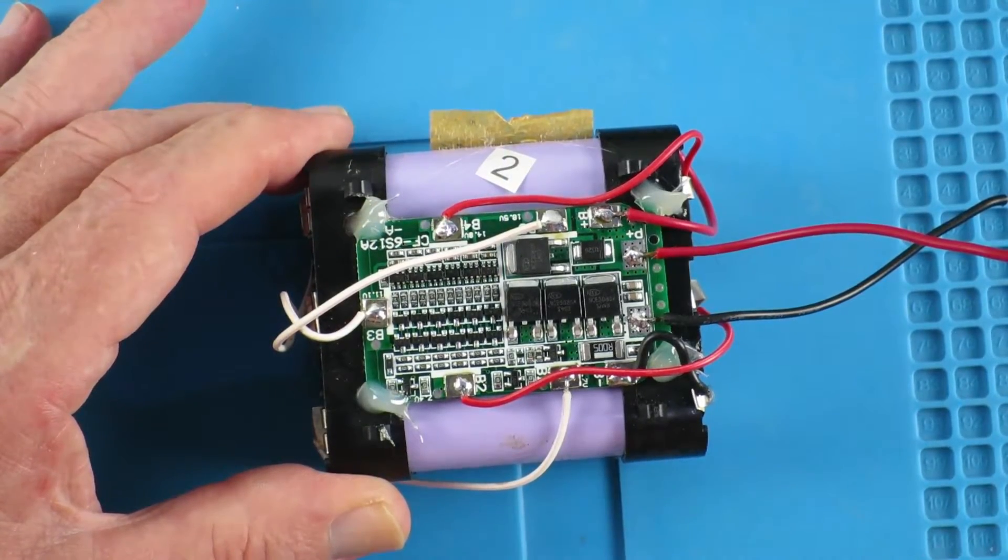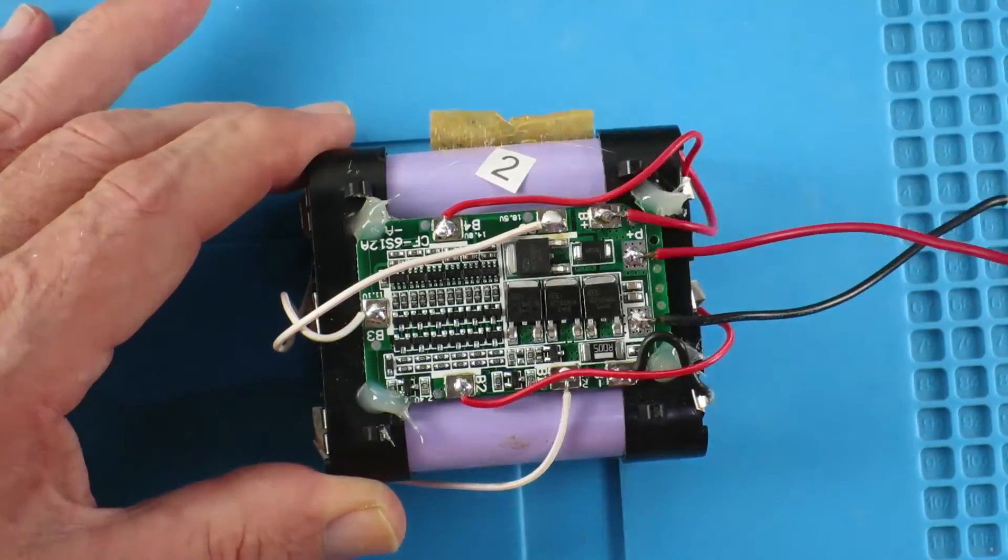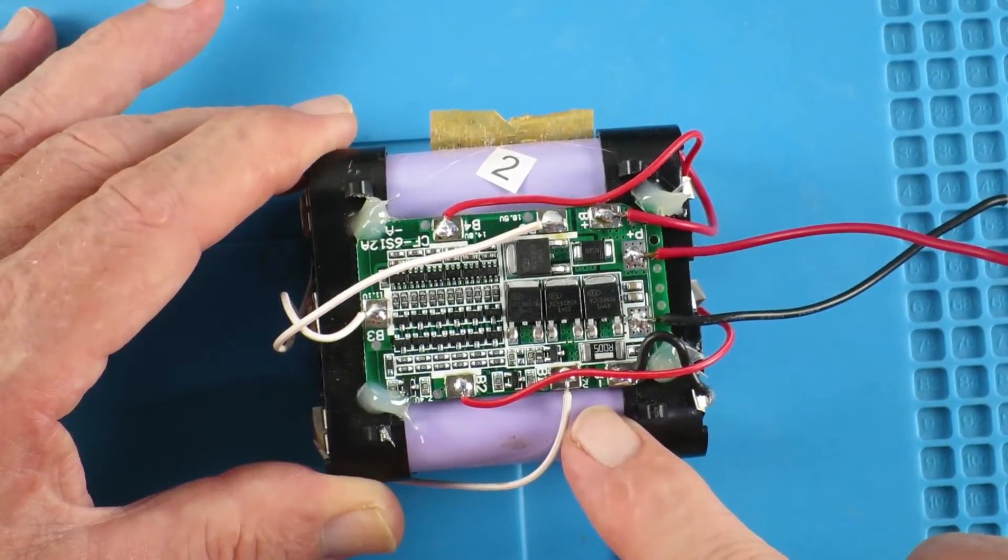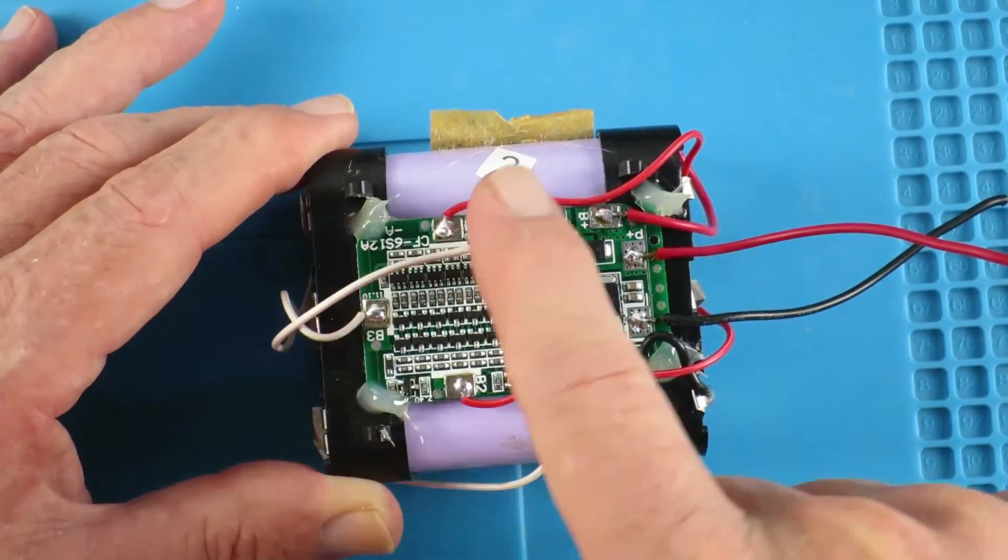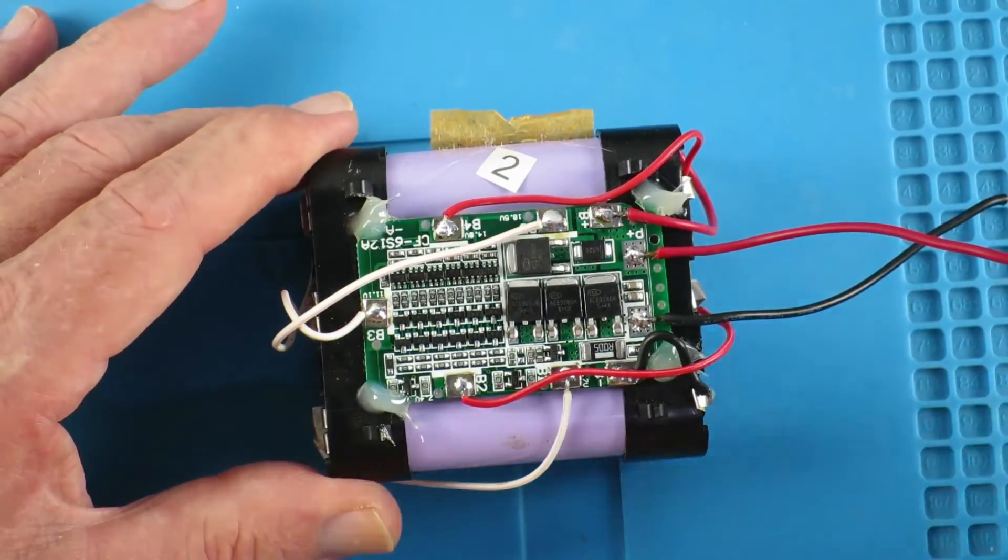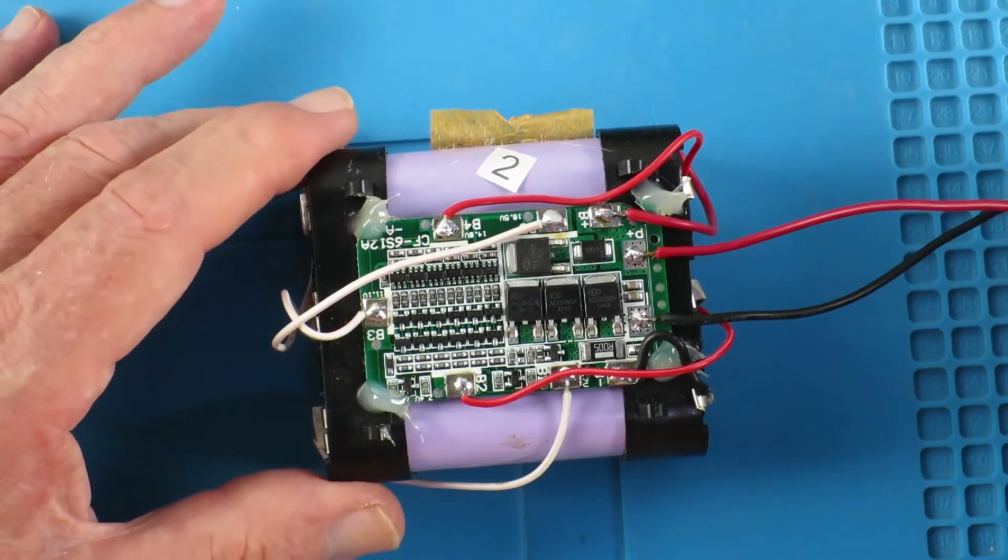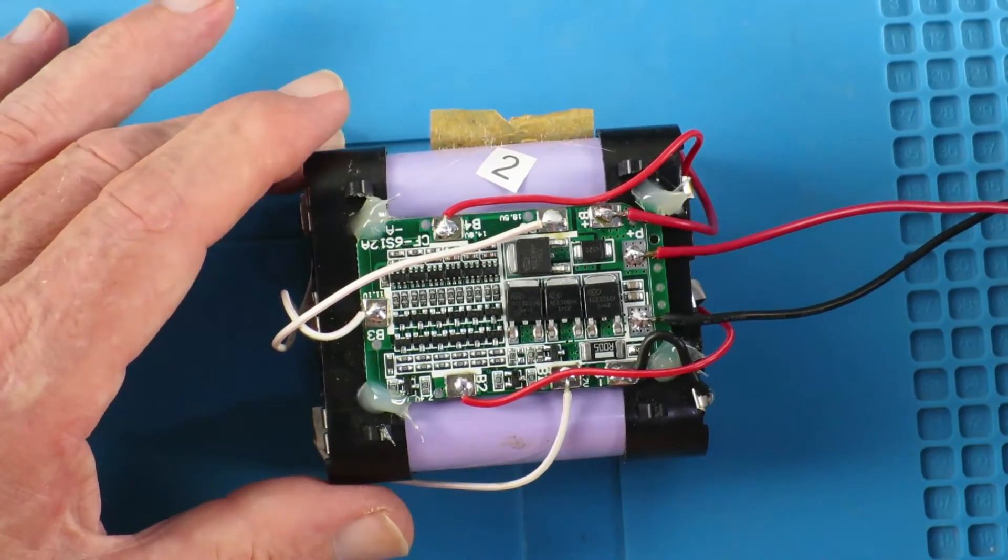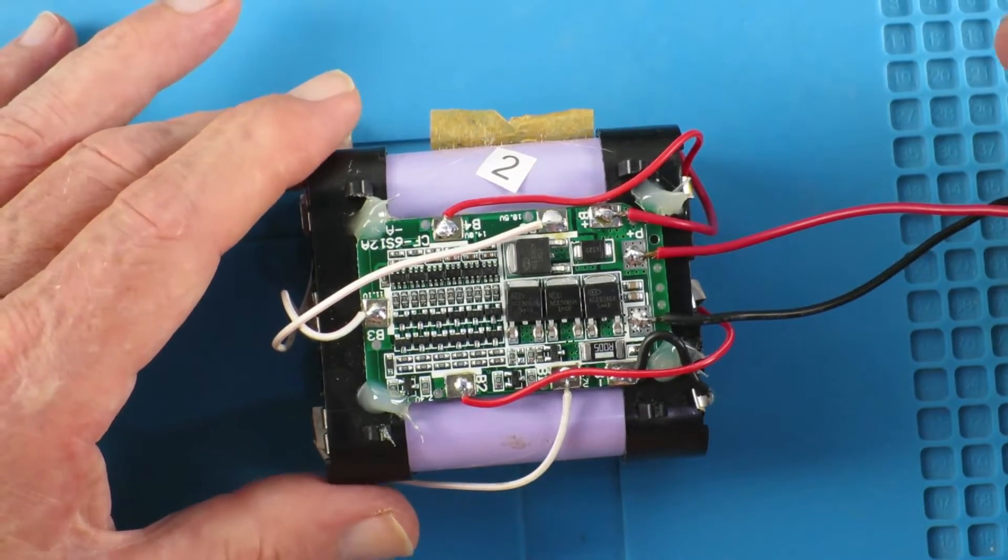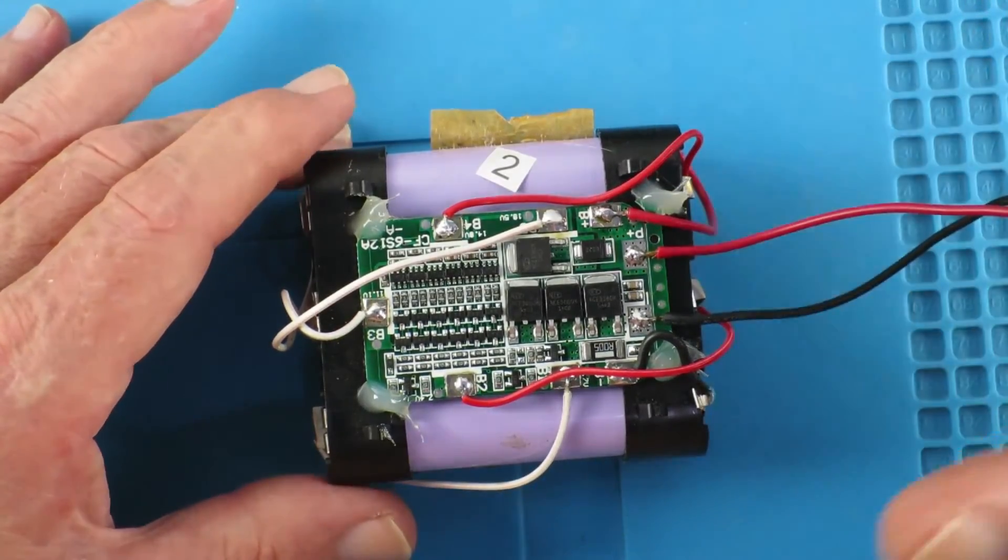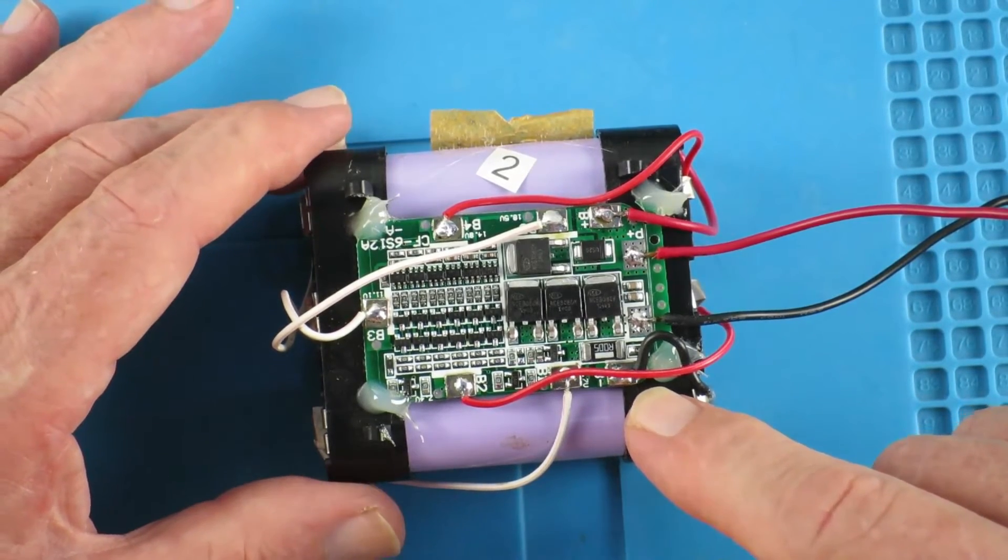Here we can see that I've put on a standard six cell BMS board, links down in the description. This is quite straightforward to wire up, just the battery plus and minus and then the individual balance leads for the cells. This is going to fit into an old Hoover cordless vacuum cleaner which was using nickel cadmium cells which are now completely useless. So we're going to replace the pack with these lithium guys and see if we can breathe new life into it.